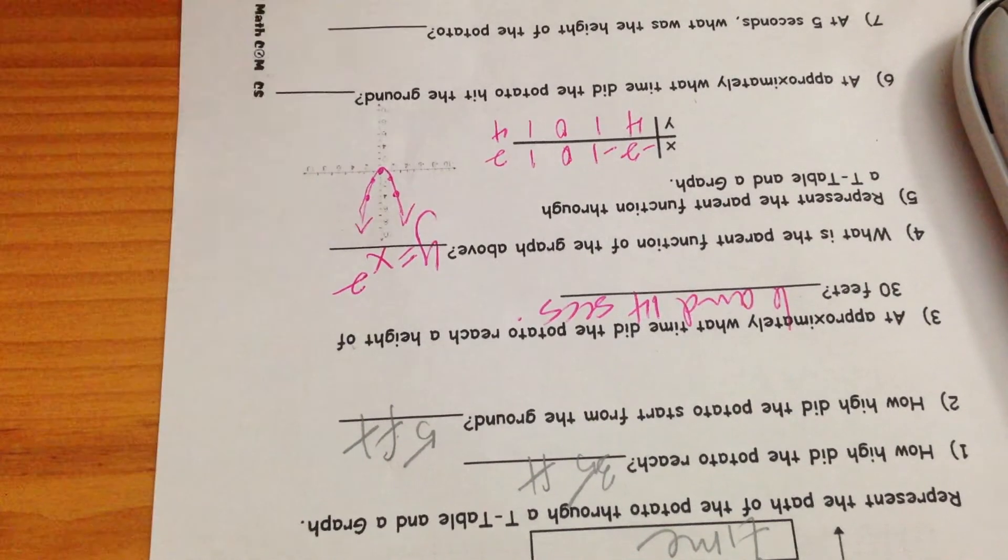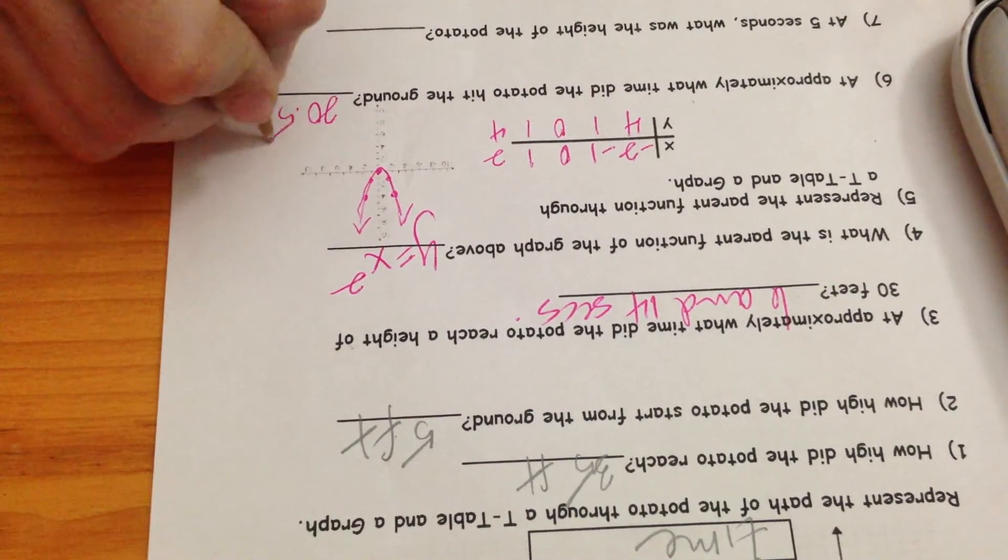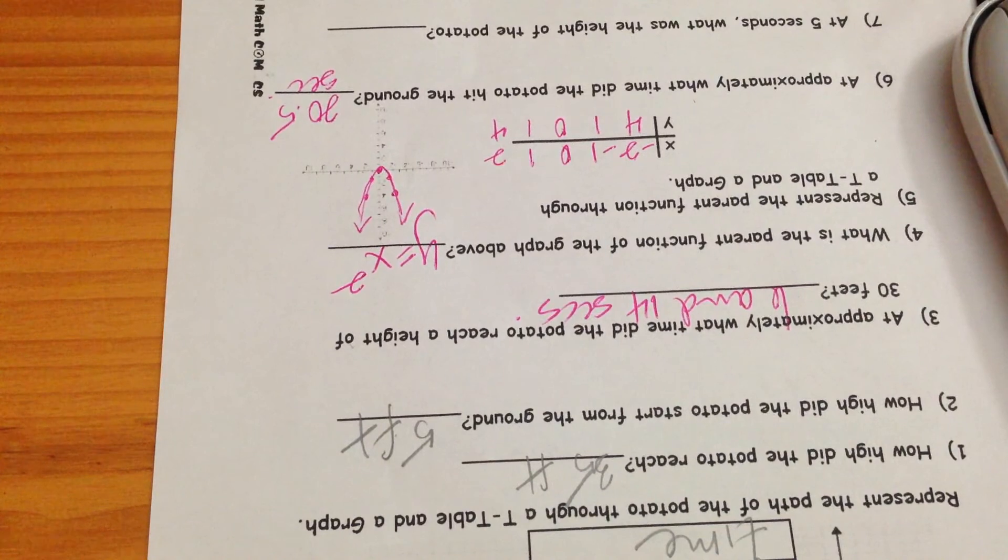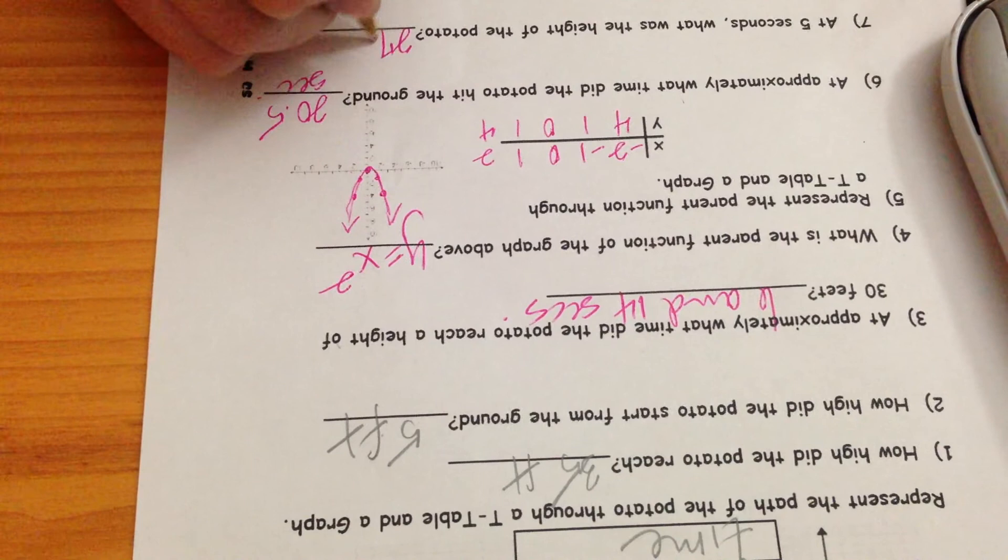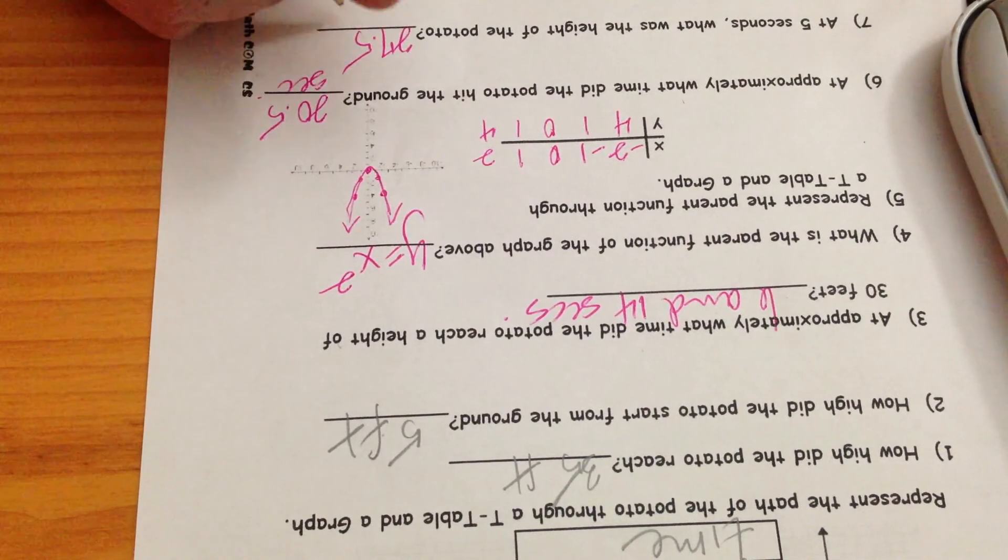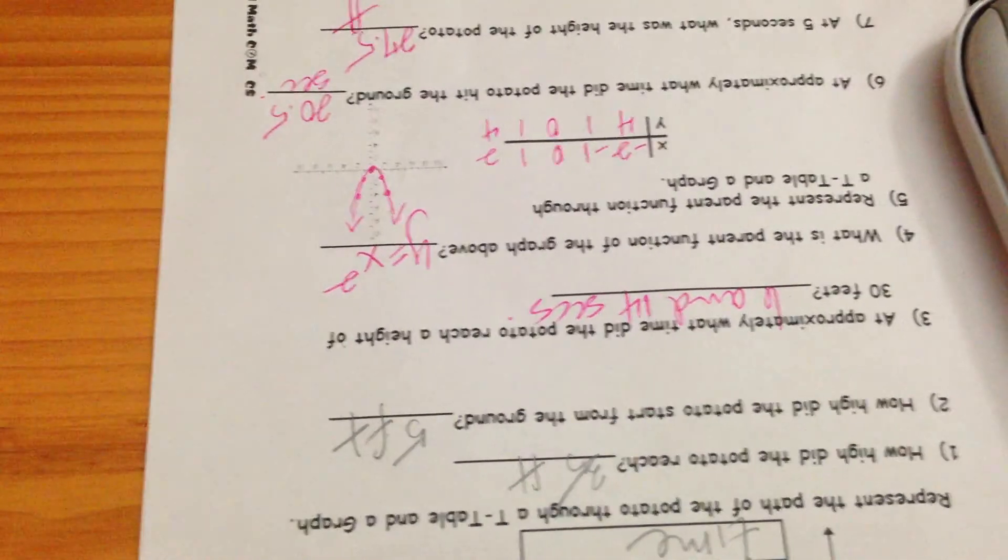Approximately what time did the potato hit the ground? Knew it, 20.5 seconds. At 5 seconds, what was the height of the potato? That's back in my table, 27 and a half. Cool, potato problem.